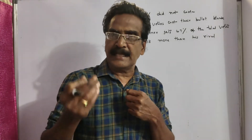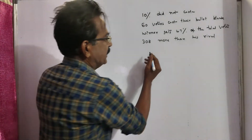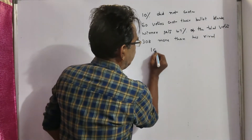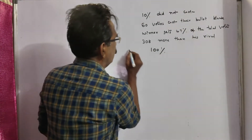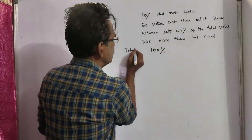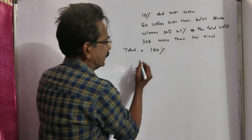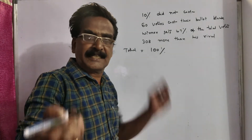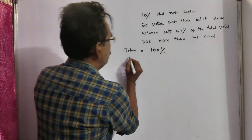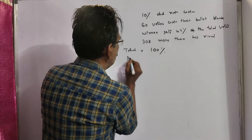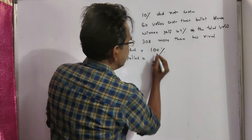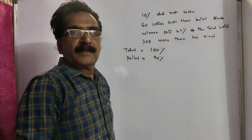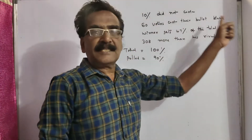Let the total votes enrolled be 100 percent. Now, 10 percent of the votes did not participate in the election and did not cast their votes. So the number of polled votes is 90 percent.